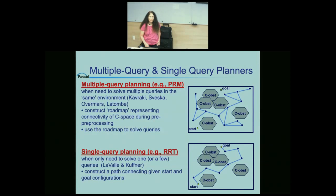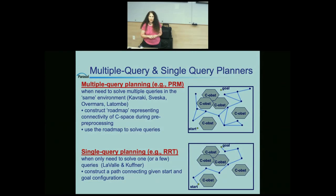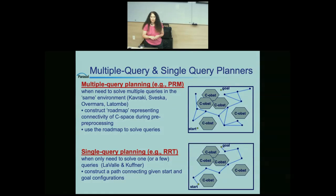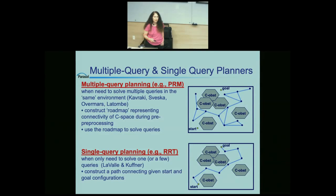There are essentially two different types of these methods. Multi-query methods build up a map of the environment in advance and then use it many times to plan — useful if a mobile robot is working in a known building. Single-query methods explore only the part of the space needed for one particular task. I'll talk about how to solve the multi-query methods; the same primitive operations can also be used to solve single-query methods.